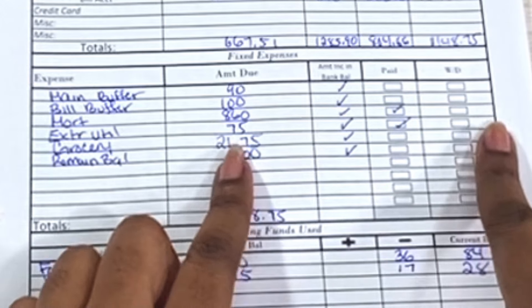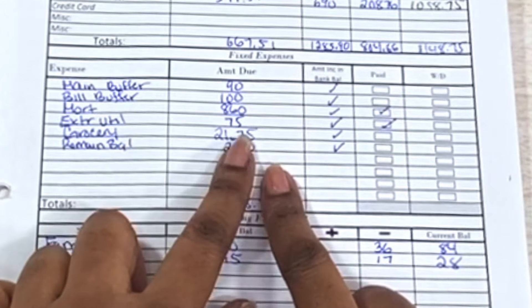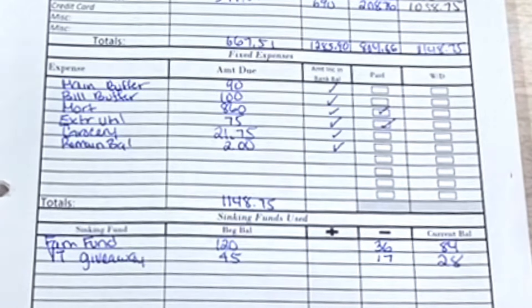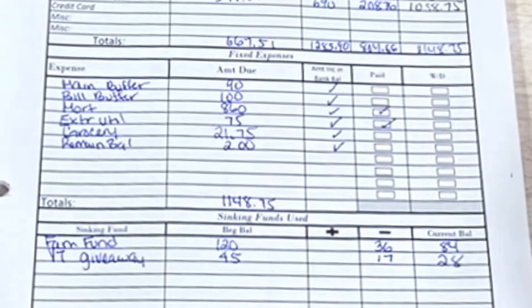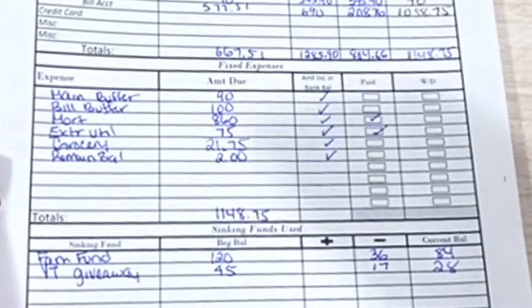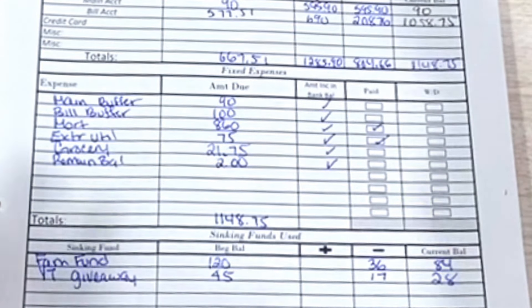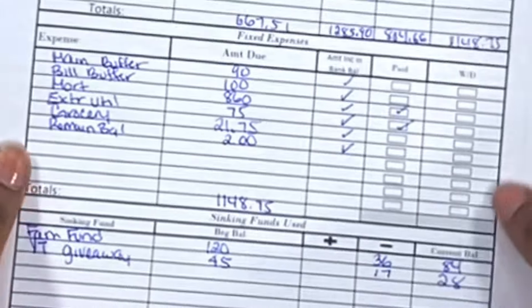Mortgage is still in there, $860. I did pay it, it just hadn't come out yet. I don't know why it takes so long for that to process. Extra utilities - I paid $75 extra in my utility account and that's going to go towards the next bill. And I did see the bill for next month, it's going to be about $240, which is about $60 more than usual, but it's winter time so we expected that. If I need to, I do have a sinking fund slash savings envelope for utilities, so if I need to use it I can if I don't have enough next month.